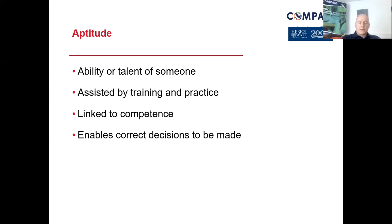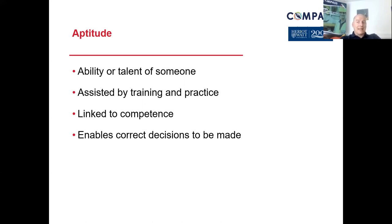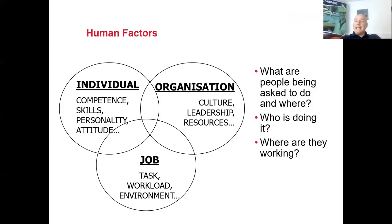Competence is linked to knowledge, skills, experience, and understanding at any given time and situation. Within aptitude, we consider correct decisions being made, which is important from a safety perspective. I mention later about muscle memory — through mastery, you do something repetitively so many times that you've mastered the skill. When you're then faced with an emergency situation, the muscle memory kicks in and you automatically give the right response.